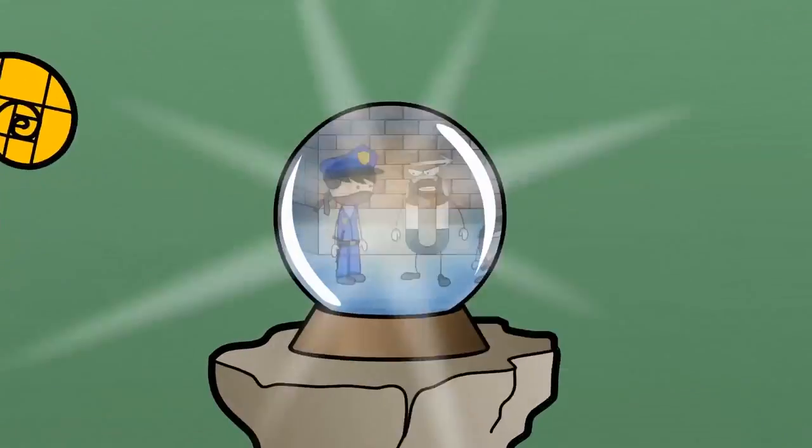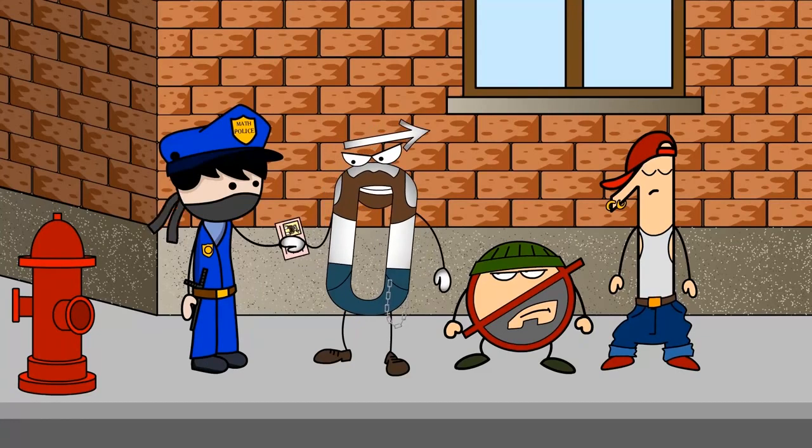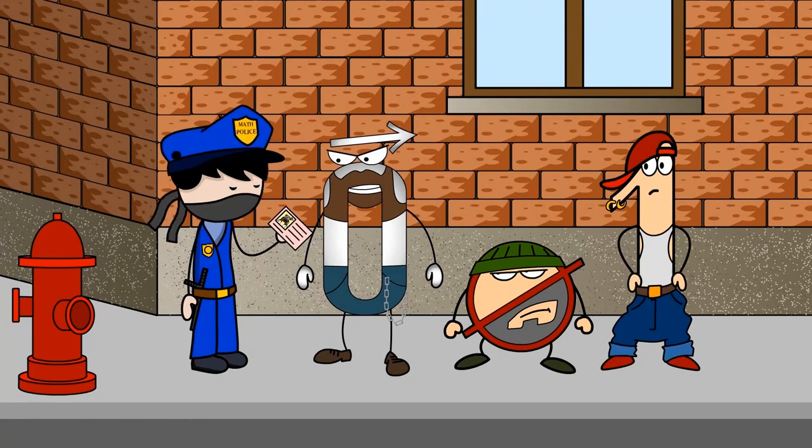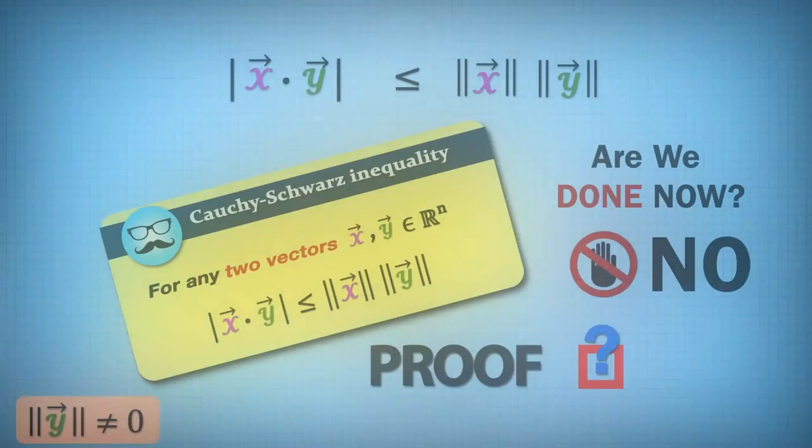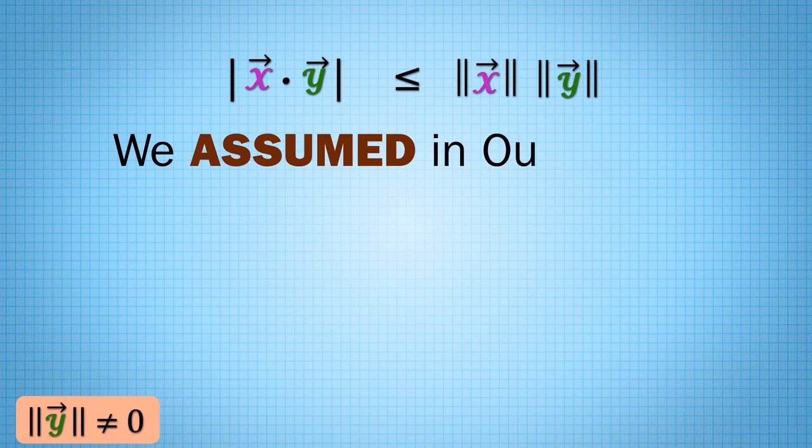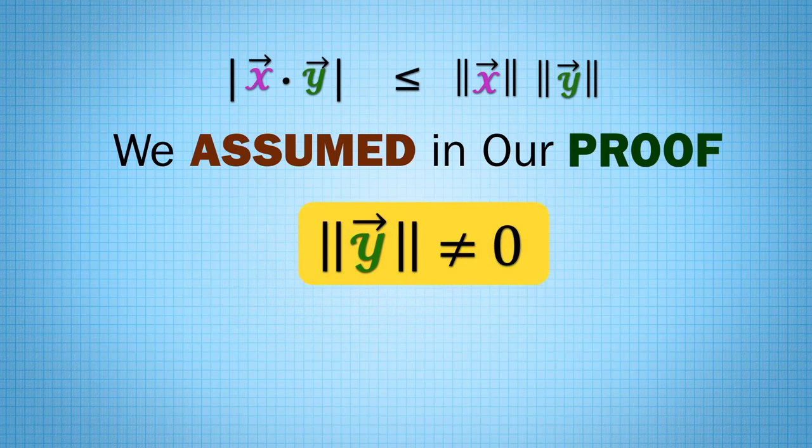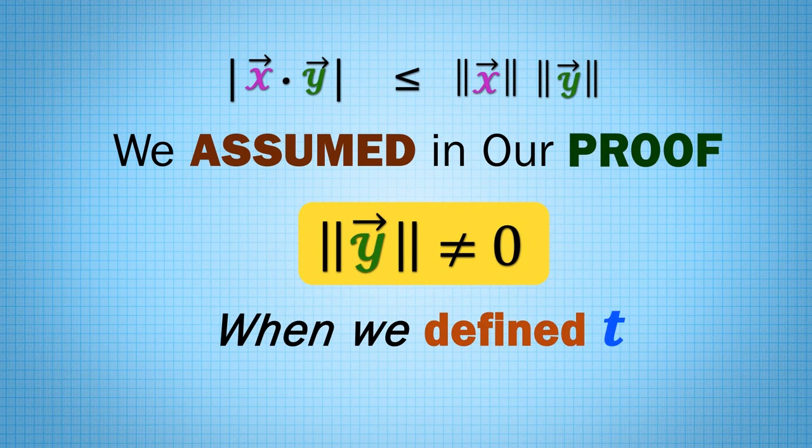Math mantra: Don't forget to check degenerate cases. We assumed in our proof that y had a non-zero norm when we defined t.